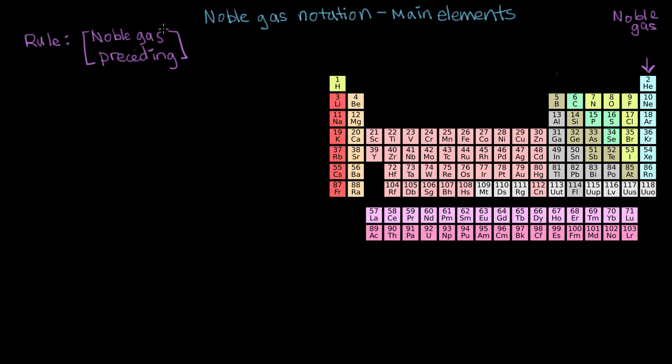And you put that in brackets and then you write your other electrons using the same notation that you normally write electron configurations in. If you don't remember what that is, we'll go through a couple examples right now. So hopefully it will become more clear.